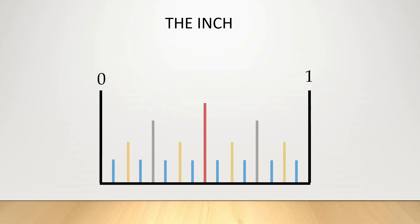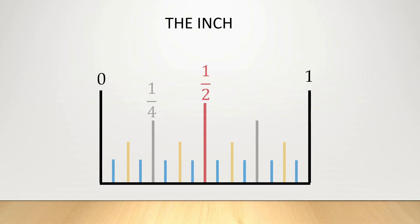So let's put these two skills together and label the inch. Let's look at the second tallest line, which is the red line. As you know, that's half an inch, or 1 over 2. Moving on, if we look at the next tallest line, or the gray line, that's a quarter of an inch, or 1 over 4. To find the next gray line, we count by odd numbers. So if this gray line is 1 over 4, this line here is 3 quarters, or 3 over 4.